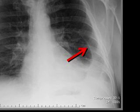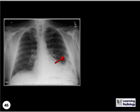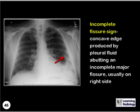What is the name given to this sign? This is the incomplete fissure sign, which is a concave edge produced by pleural fluid abutting an incomplete major fissure. It's usually seen on the right side.